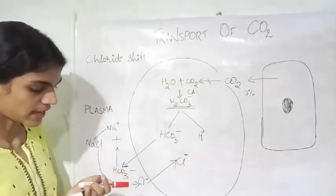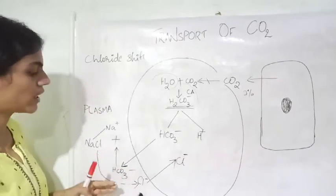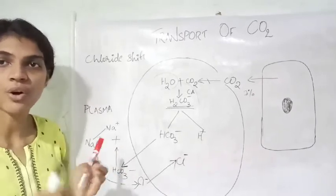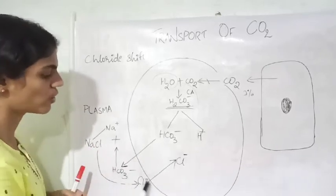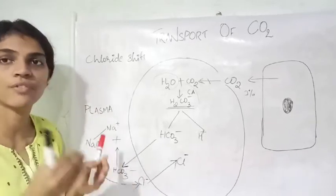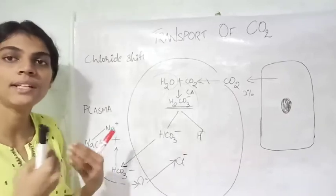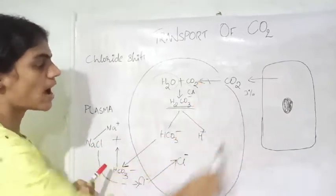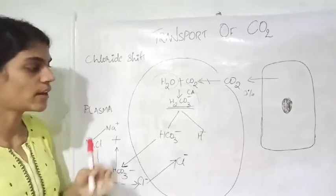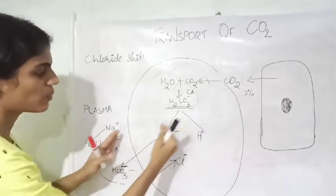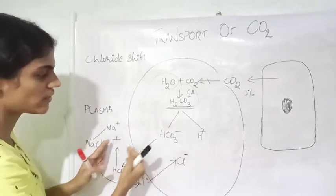You can see an important phenomenon here, that is the chloride shift. Chloride shift is the efflux or influx of chloride ions—the mass amount of chloride ions into the interior of the RBC to maintain the ionic balance. When all the bicarbonate ion is getting pushed, it is getting eliminated from the RBC.